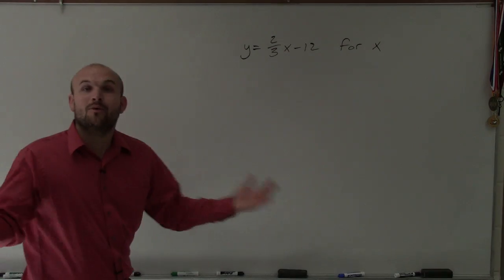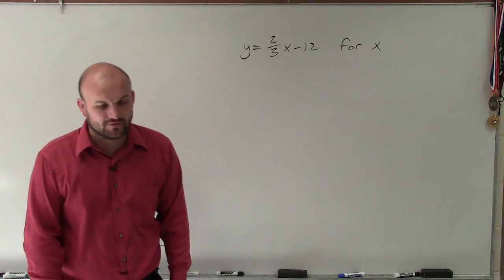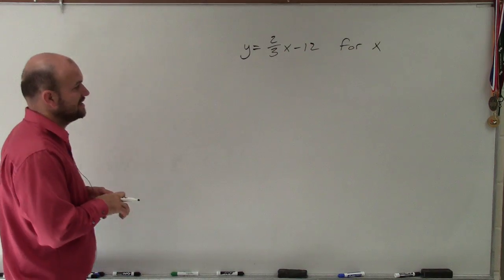I'm going to do this problem a little bit differently, but it's going to be along the same course. So what I like to do is show you how to solve for x in this equation, y equals 2/3rds x minus 12.